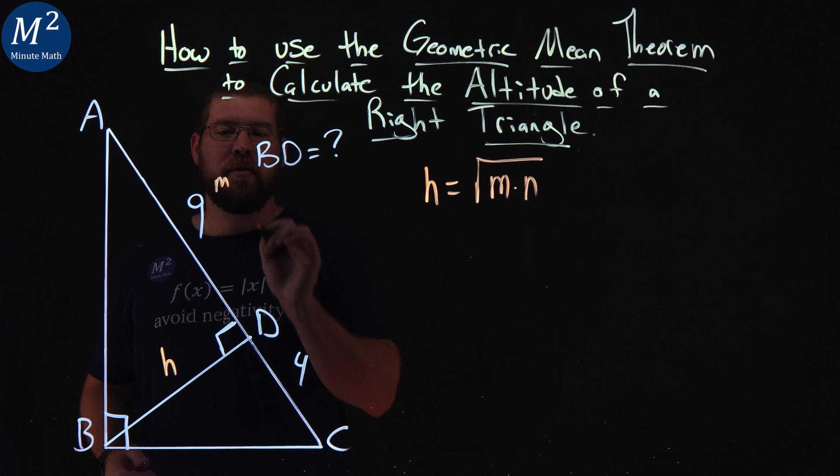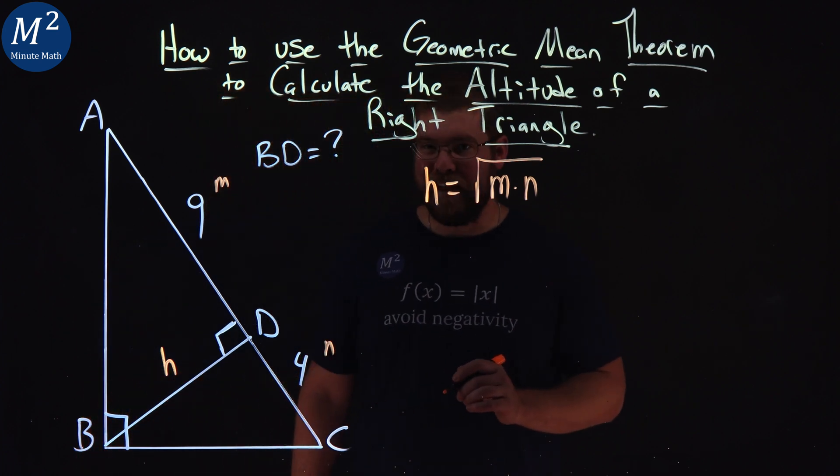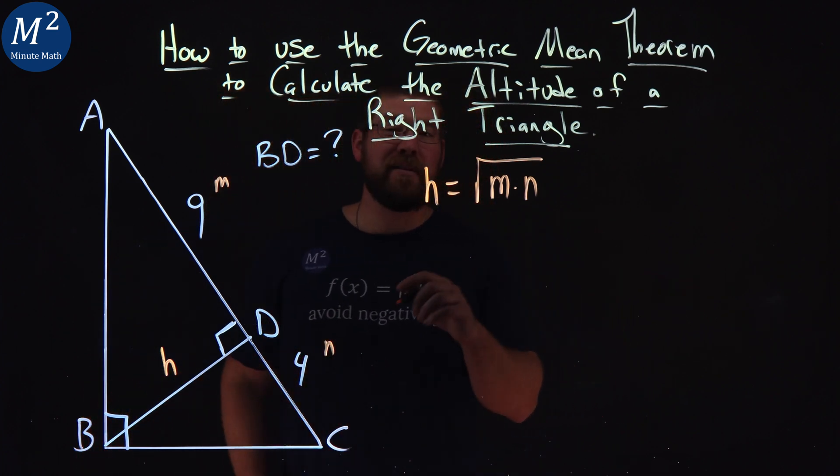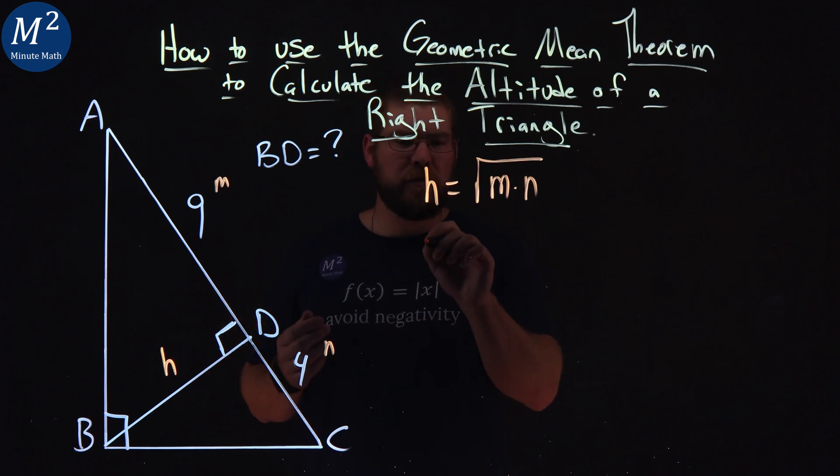So in this case, let's call 9 m and 4 n. Pretty simple. We plug that in to our equation here.